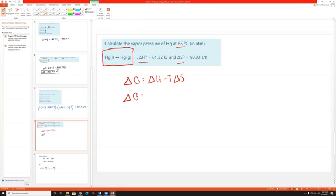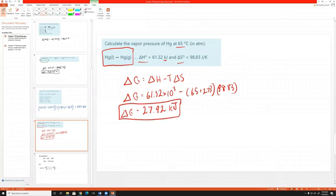So delta G is going to equal delta H minus T delta S. And we can solve for that. And again, just like we did before, delta H is usually going to be given in kilojoules. So we need to turn that into joules. So it'd be 61.32 times 10 to the third minus the temperature, which is going to be 65 plus 273 times delta S, which is 98.83. And we can solve for this and get 27.92 kilojoules.